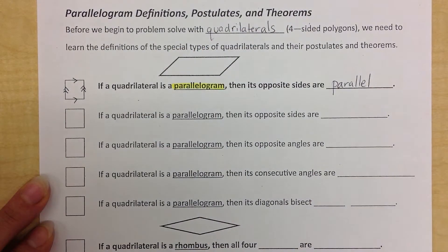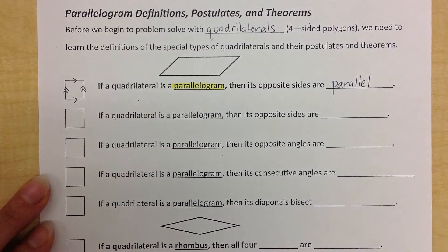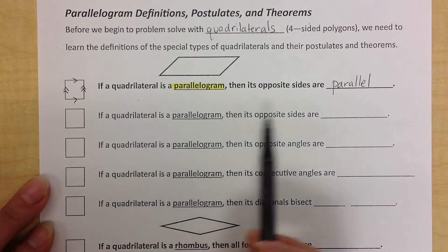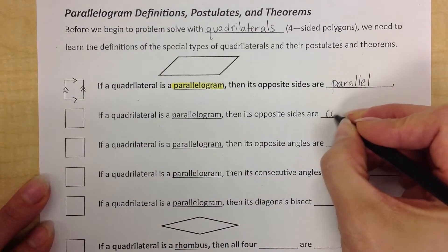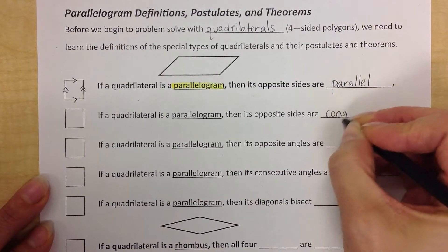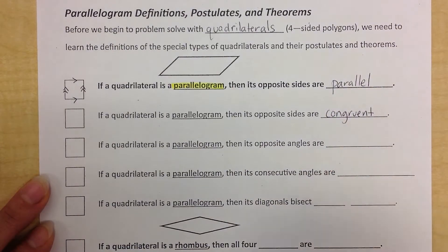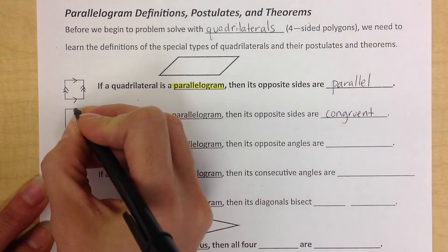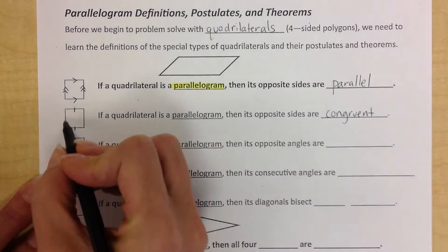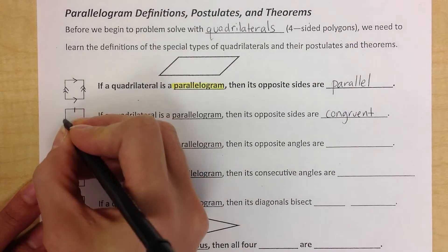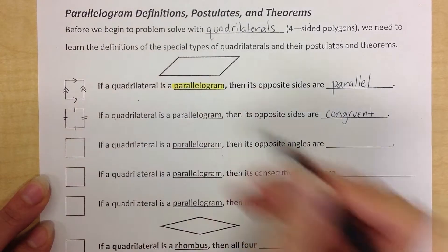There are four properties that a parallelogram will have 100% of the time. One of them is that opposite sides are also congruent. So if you know something's a parallelogram, you know that this side will have the same measure as this side, and that this side will have the same measure as this side — those are opposites.